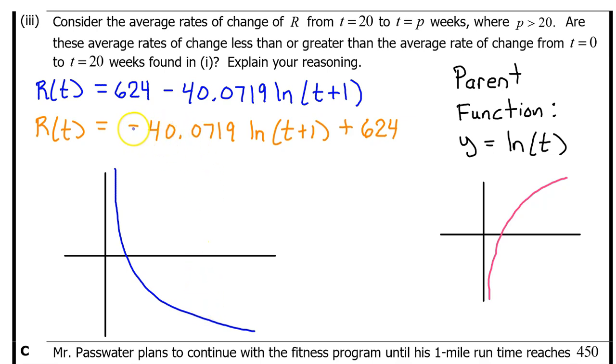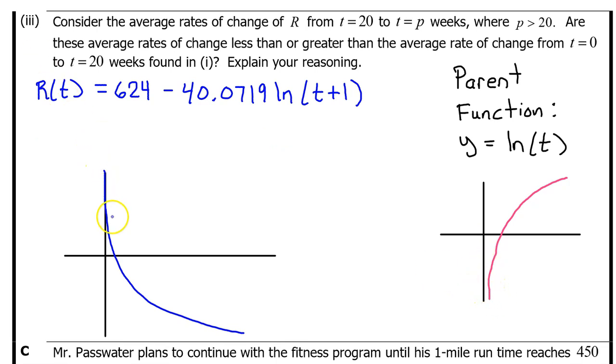We have memorized that the parent function y = ln(t) looks like this. The negative sign in the front causes a reflection over the x-axis, which turns R(t) upside down compared to the parent function. The 40, ignoring the negative sign for a moment, is a vertical dilation by a factor of 40. That doesn't really change the look of the graph. Nor does the vertical translation by 624. On the other hand, the t + 1 is a translation left 1. And that will cause the graph to strike the y-axis and have an intercept, which it normally wouldn't have. This is basically what R(t) looks like.